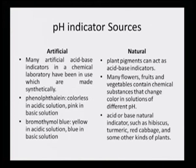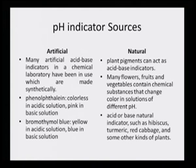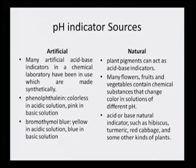There have been some natural sources from plant pigments that can act as acid-base indicators. This prompted us to take a serious look at which natural dyes have been used for acid-base indicator work. Many flowers, fruits and vegetables contain chemical substances that change color in solutions of different pH. New natural indicators such as those from hibiscus, turmeric, red cabbage and some other kinds of plants have been explored as natural sources for pH indicators.